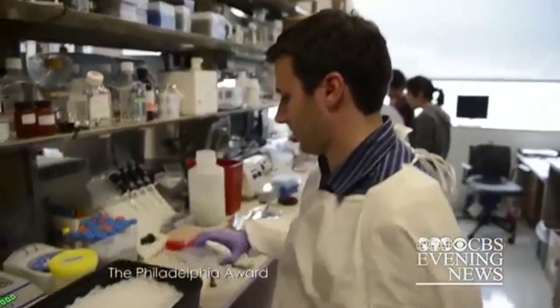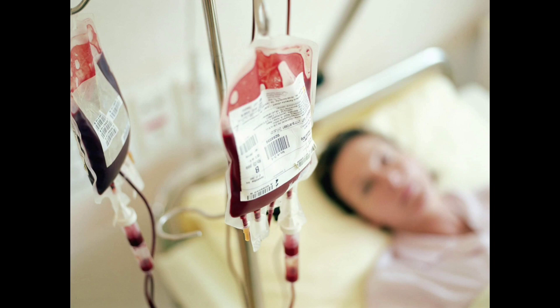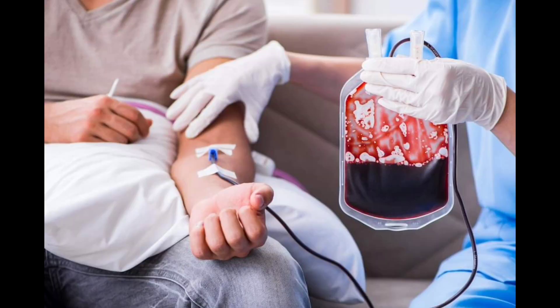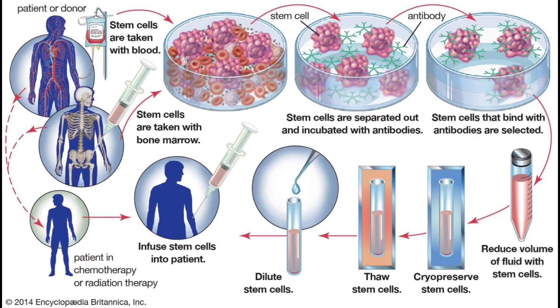Gene therapy can also provide genes that promote or impede the growth of new tissue and deliver genes that stimulate the healing of damaged tissue. The most common type of cell therapy is blood transfusion — the transmission of red blood cells, white blood cells, and platelets from a donor. As seen here, the CAR-T cell therapy process goes from the manufacturing process to infusing the same patient with engineered T cells. Another common cell therapy is the transplantation of hematopoietic stem cells to create bone marrow, which has been performed for over 40 years.